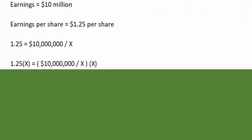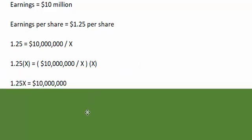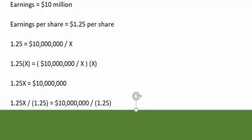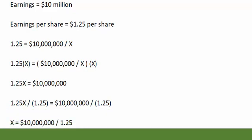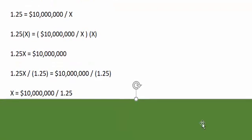If we multiply both sides by X, we get on the left side $1.25 times X equals $10 million divided by X, times X. When we have an X in the numerator and the denominator, the X's cancel out and become 1. So what we're left with is $1.25X equals $10 million. From there, we divide both sides by $1.25, and we're left with X equals $10 million divided by $1.25.